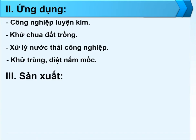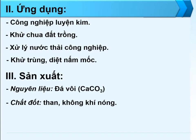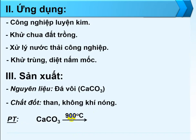Nguyên liệu để sản xuất canxi oxit là đá vôi, công thức hóa học là CaCO₃. Ngoài ra còn cần có chất đốt như than đá, củi, dầu, khí tự nhiên. Phản ứng hóa học xảy ra: nung đá vôi bằng lò nung thủ công hoặc lò nung vôi công nghiệp. Canxi cacbonat (đá vôi) nhiệt phân ở nhiệt độ trên 900°C tạo ra vôi sống canxi oxit (CaO) và khí CO₂.